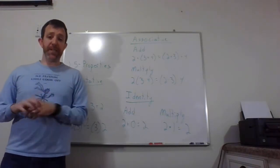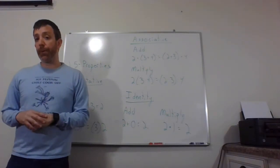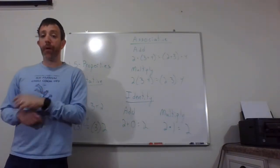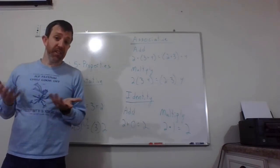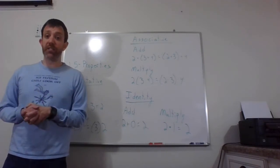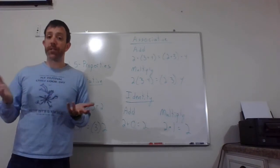All right, so there are five basic properties, but the first four actually come in two parts. One part for addition and one part for multiplication. The good news is they're identical. The addition and multiplication kinds are identical. You just change your addition sign to a multiplication sign.